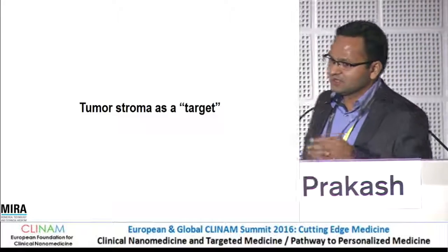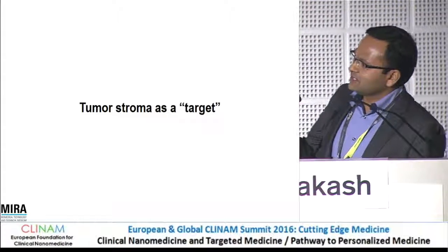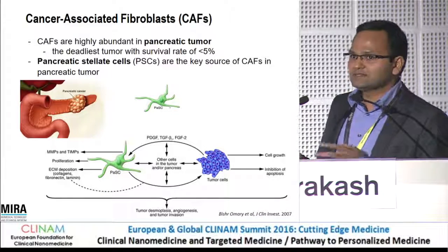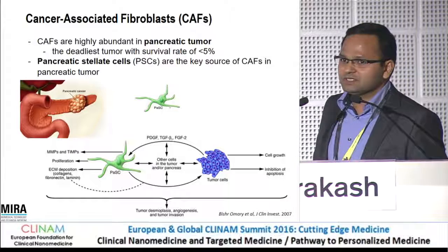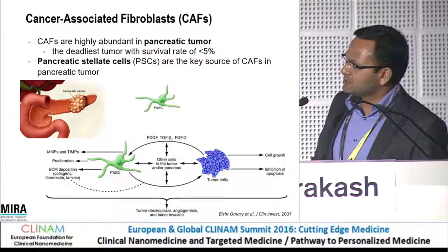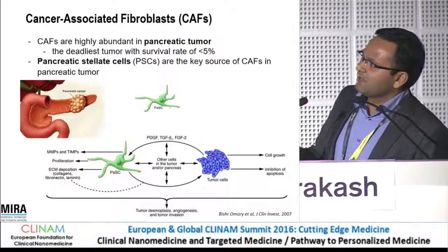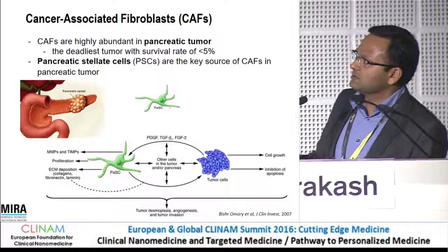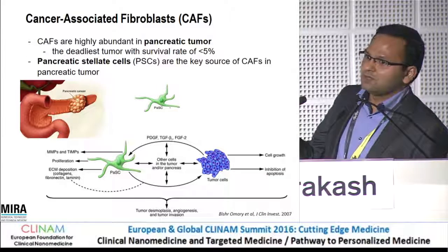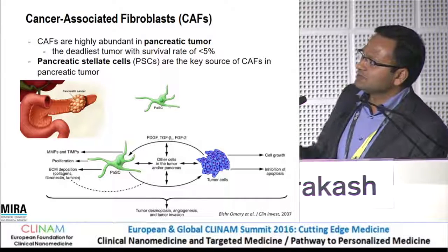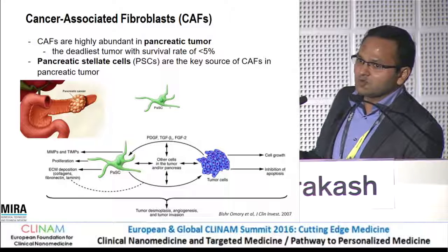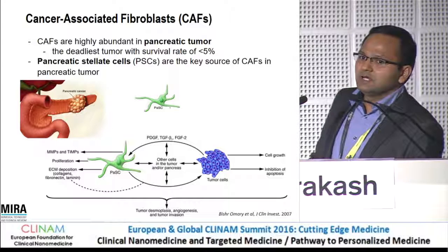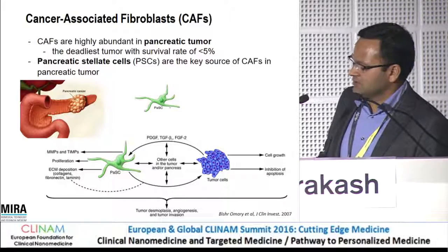Moving to the target part — that's pancreatic cancer, where stroma becomes the most important. This is the project two of my PhDs are working on, one of whom, Jonas Schnittert, won the first poster prize yesterday. Pancreatic tumor is the deadliest cancer; it falls into rare cancers but has the worst prognosis. The reason is the stroma. The stroma-tumor cell interaction has been proposed and studied for almost ten years.